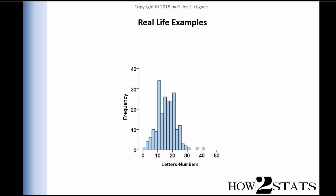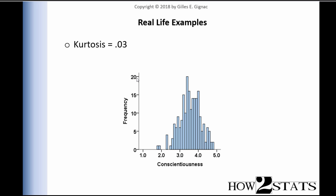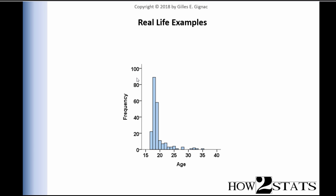For real-life examples: letters and numbers — a distribution we've already looked at that had a bit of positive skew — also has some positive kurtosis, suggesting it is taller and narrower in the middle than you would expect. Honesty and humility has almost no kurtosis whatsoever. Conscientiousness has almost no kurtosis whatsoever. Now, what about a highly skewed distribution? It's certainly very, very skewed, and it's also highly kurtotic — look how skinny and tall it is, very protruding at that portion, which is indicative of positive kurtosis. It also has positive skew. Any time you have a lot of skew, you will probably have a lot of kurtosis. But just because you have a lot of kurtosis does not necessarily mean you'll have a lot of skew — you might not have any skew at all.